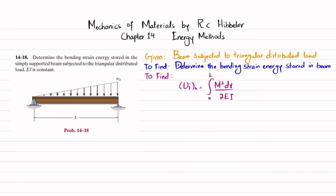First, we remove the pin support at point A, which gives reaction force A_y, and remove the roller support at point B, which gives reaction force B_y. We will find A_y and B_y using equations of equilibrium. The triangular distributed load converts to a point load of magnitude (1/2)w₀L, acting at a distance of L/3 from the B side.